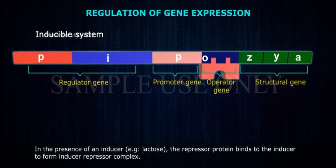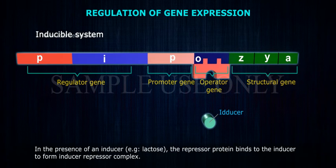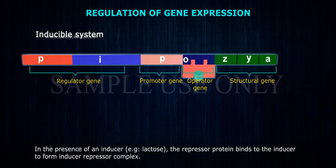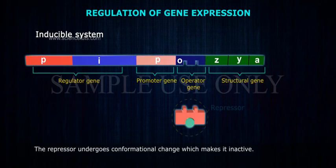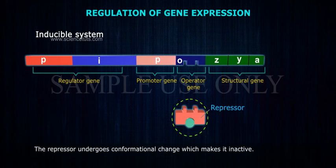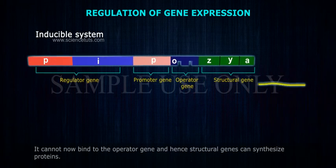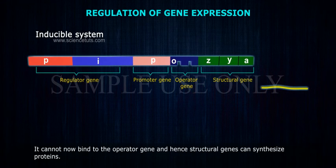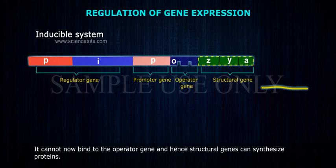In the presence of an inducer, e.g. lactose, the repressor protein binds to the inducer to form an inducer-repressor complex. The repressor undergoes conformational change which makes it inactive. It cannot now bind to the operator gene, and hence structural genes can synthesize proteins.